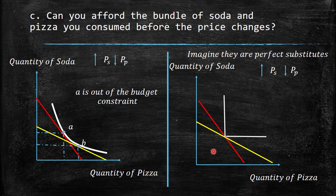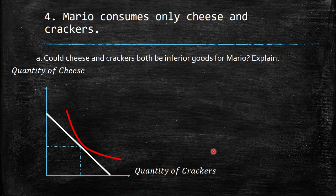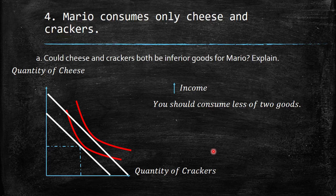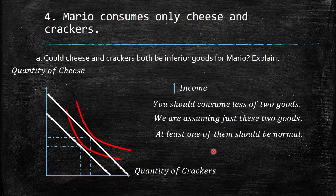Question 4: Mario consumes only cheese and crackers. Could cheese and crackers both be inferior goods for Mario? With quantity of crackers on the x-axis and quantity of cheese on the y-axis, if income increases and Mario is supposed to consume less of both, that violates feasibility — at least one of the two goods must be a normal good. So both cannot be inferior simultaneously.